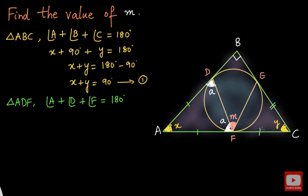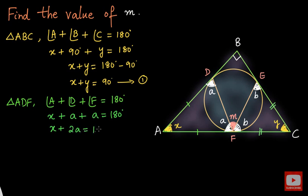For better clarity, let me put double lines. Because of that, angle E will be equal to angle F by the property of isosceles triangles. If I name this angle as B, then the other will also be B. Now for triangle ADF, applying the angle sum property: angle A is X, plus angle D is A, plus angle F is A, equals 180 degrees. So X plus 2A equals 180 degrees, giving us X equal to 180 minus 2A. Let me take this as result number 2.